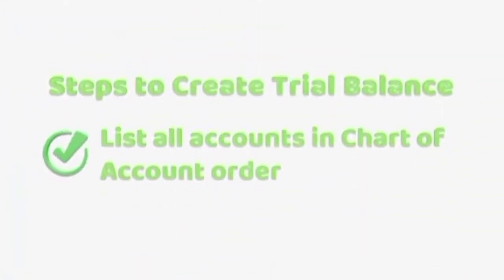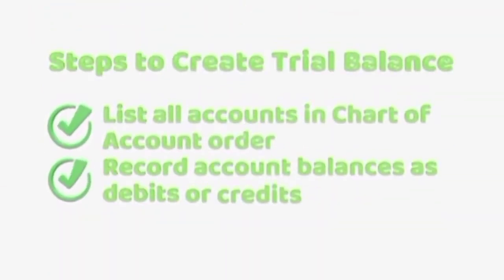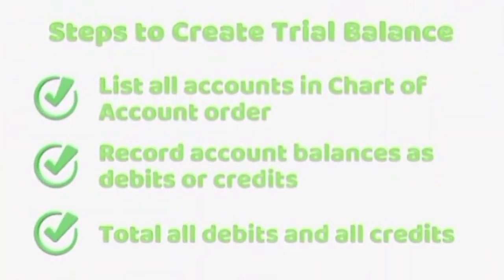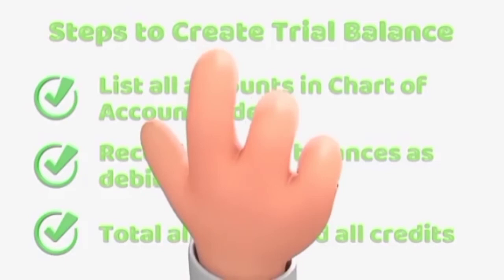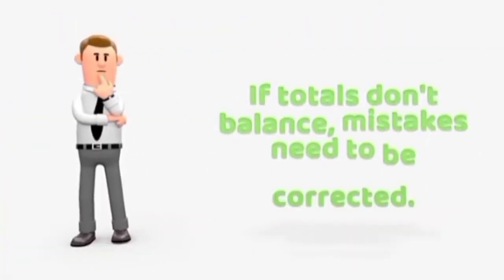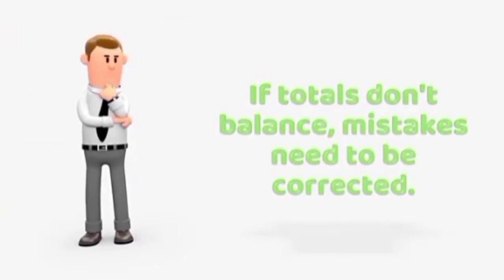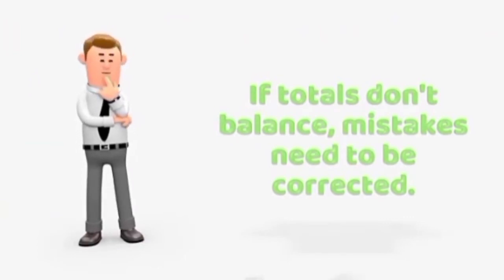A trial balance is a report that proves all the debits and credits balance at the end of the accounting period. It lists every account in the accounting system — even accounts with zero balances — in chart of account order, with all balances listed as either debit or credit. The last step is to total all debits and all credits. If total debits equal total credits, the accounting equation is in balance. If the totals don't match, mistakes have been made and need to be corrected before creating financial statements.